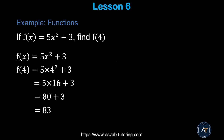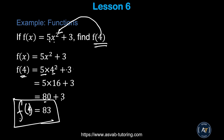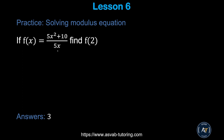Finally, we'll learn about functions. A function f(x) gives exactly one y value for each x. For f(x) = 5x² + 3, find f(4): substitute 4 for x to get 5(4²) + 3 = 5(16) + 3 = 80 + 3 = 81. Try the practice problem and make sure you get f(2) = 3. That covers the basic algebra you need for your officer candidate test — watch the video several times and practice using the app.